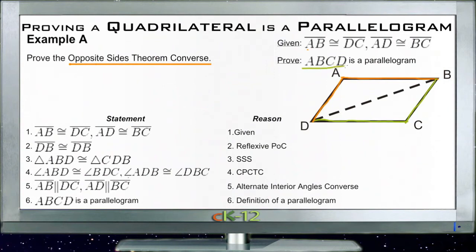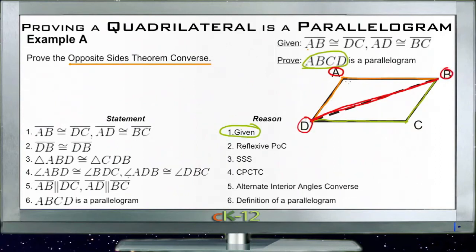We start with our givens as the first statement, noting that it is given. We can also point out that right in the middle we have DB, which is our diagonal. DB fits as part of two different triangles: along with the diagonal, ADB forms one triangle on the top left side of the figure, and BCD forms another triangle on the bottom right, with that diagonal line shared by both.